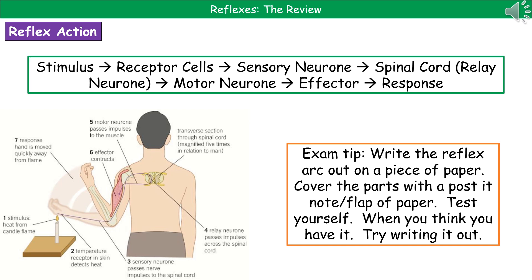You've got to know that reflex arc. One of the best things you can do is write it out on paper, stick post-it notes or small flaps over the top, and test yourself over and over again. When you think you've got it, try writing it out from scratch without anything in front of you. If they give you this as a longer answer question — maybe a six-marker — use that flow chart as your starting point but turn it into sentences, adding joining words and a little more scientific detail. If you know those key parts and what they do, you can put together that six-mark answer really easily.